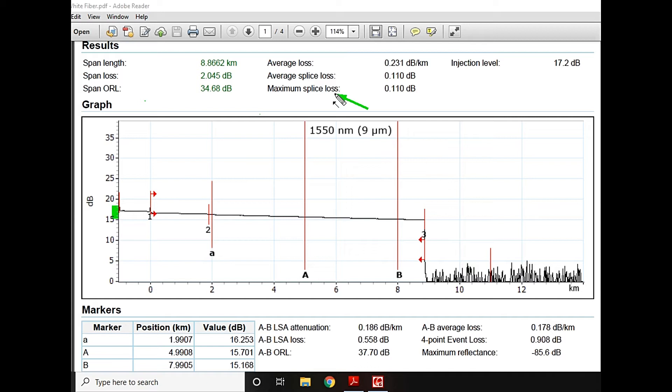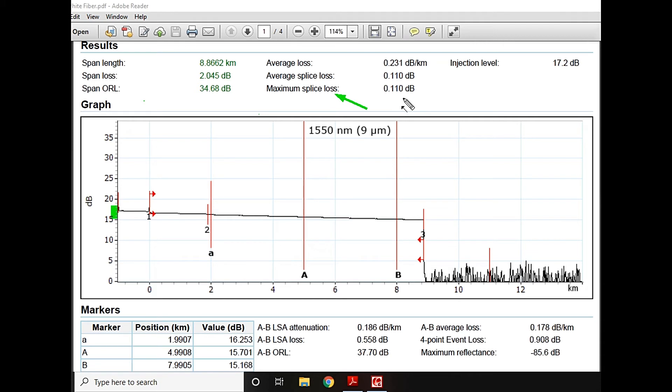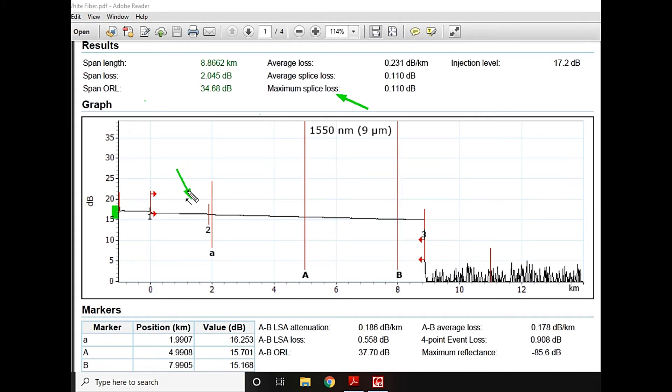For example, here the maximum splice loss that I am having is 0.10 and I'm sure this is event number two. How I found this, I'll show you and discuss it next.